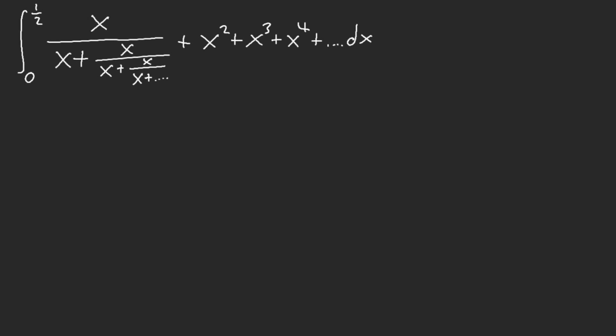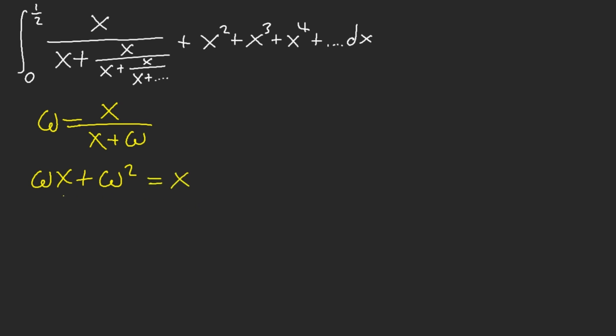This is probably the coolest integral my friend and I have ever made for UC Berkeley. Be very careful — people can solve this integral, but there's a much shorter way. Let me show you. We have x plus the infinite continuation — the inside is equal to its outside. So we have wx plus w squared equal x, giving us w squared plus wx minus x equals zero.